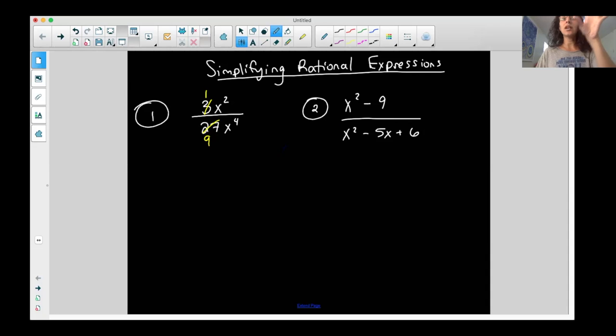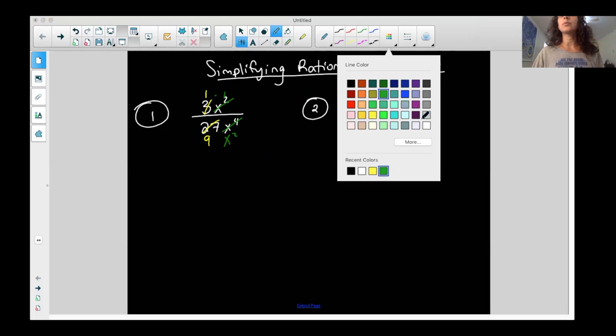x times x on top, and four of them, x times x times x times x, on the bottom. So what do they have in common? I can cancel out two of them. So when I cancel out two here, I'm left with basically nothing or one times one. And when I cancel out two of these, I'm left with an x squared. So basically the difference between the two exponents.